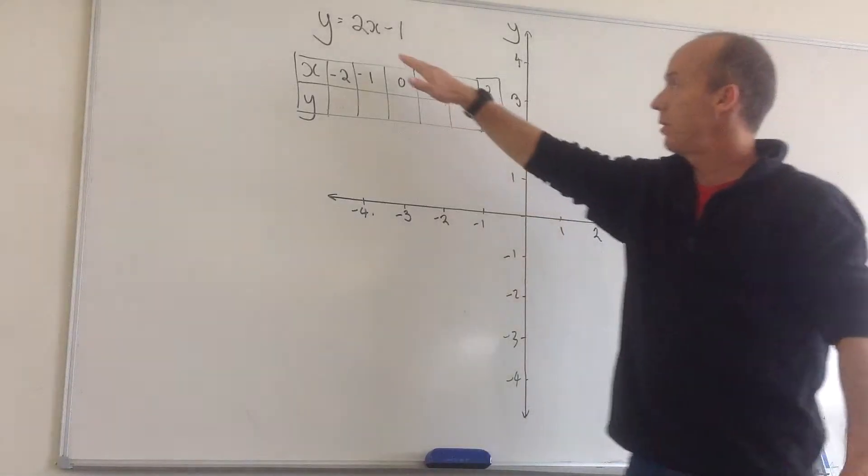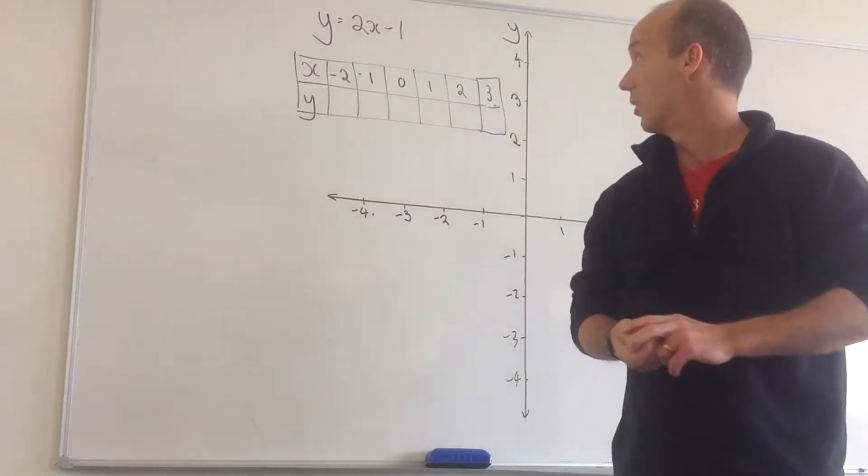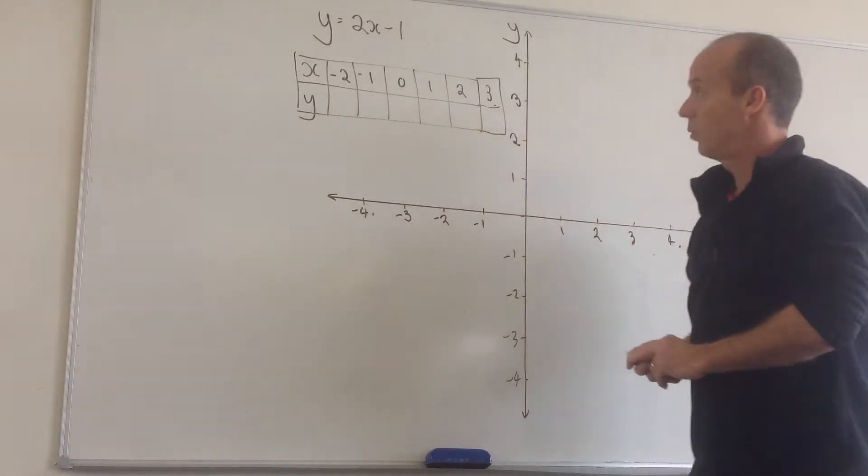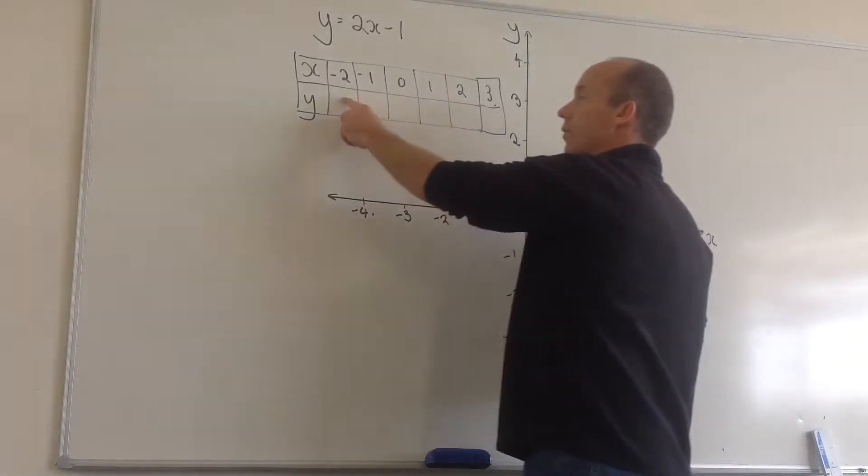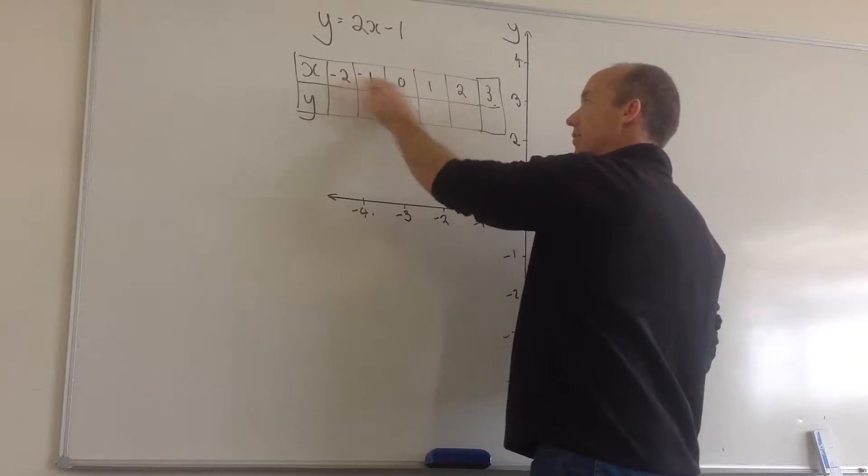So for this example that I've got, I've got an equation which says that y is equal to 2x minus 1. And I've drawn up a table of values. So what I'm going to do is work out what my corresponding y value is for each of these x values across here.